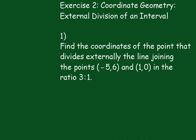Exercise 2, number 1. Find the coordinates of the point that divides externally the line joining the points (-5, 6) and (1, 0) in the ratio of 3 to 1.